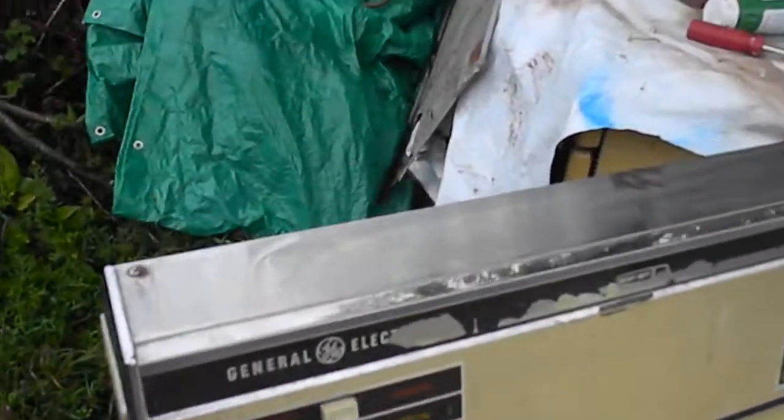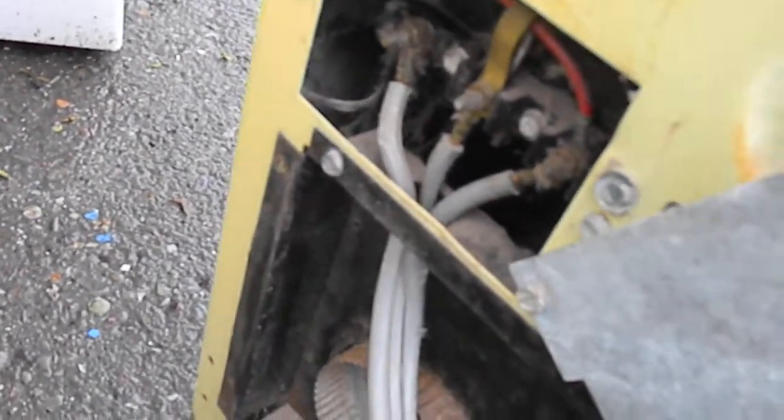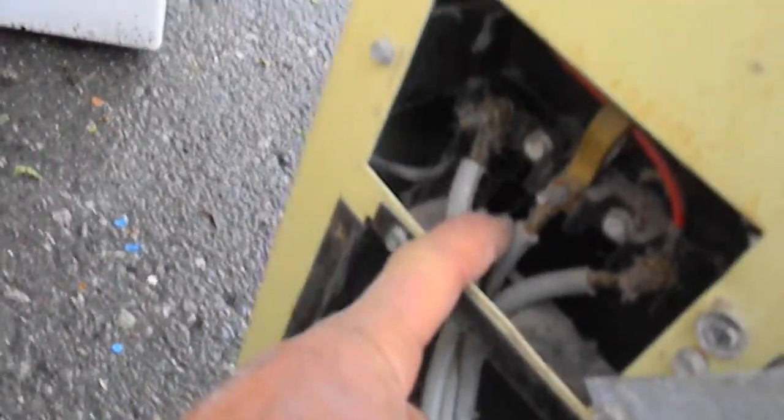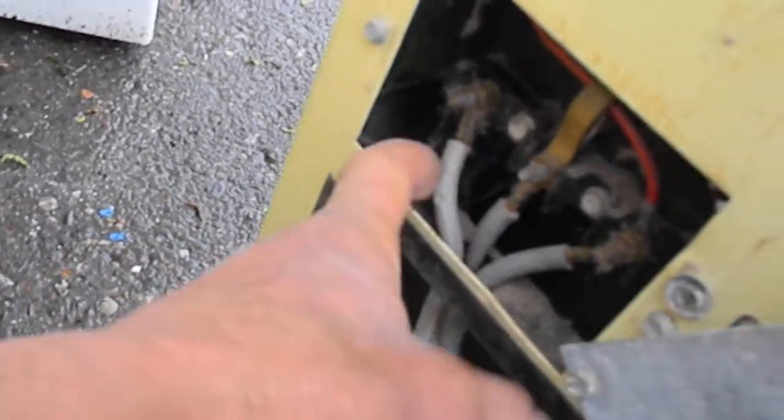Next thing you want to check is, of course, you want to unplug your dryer or make sure that the power is off to check. Just in case it's not heating correctly, you want to check that all of these terminals are connected firmly. If they're not connected firmly, it'll burn out one of these terminals most likely.